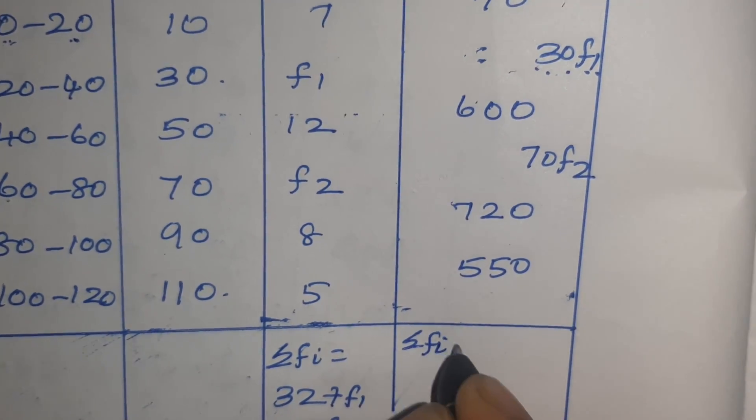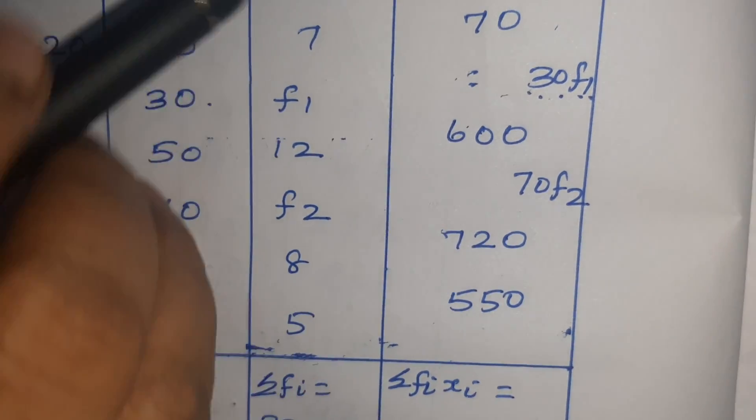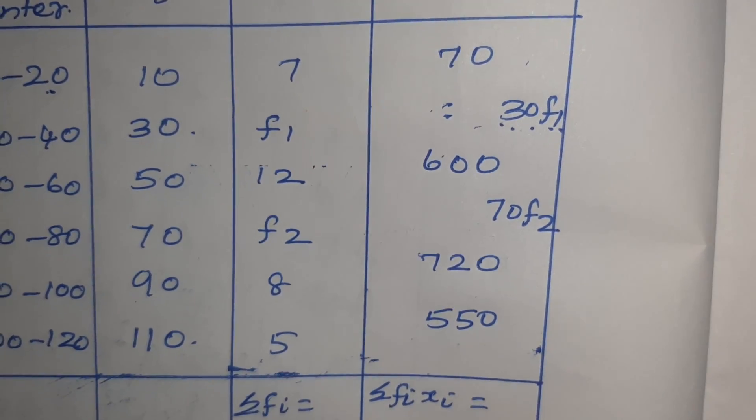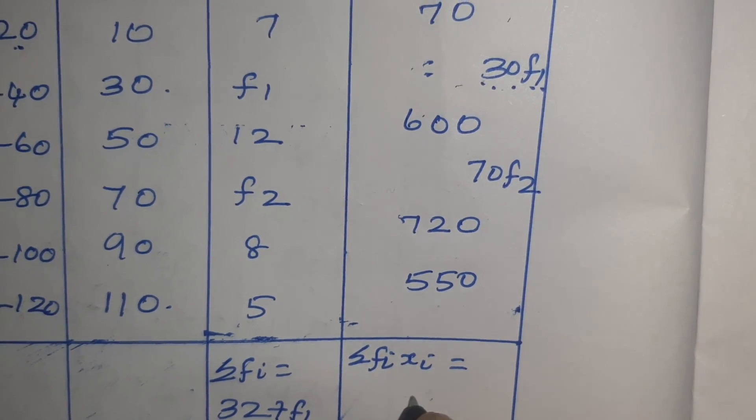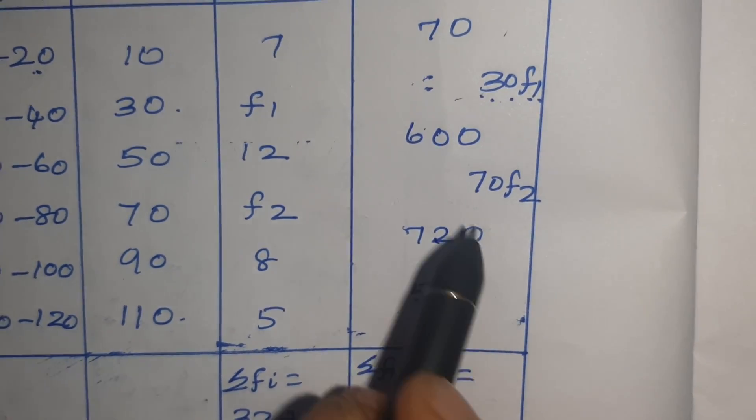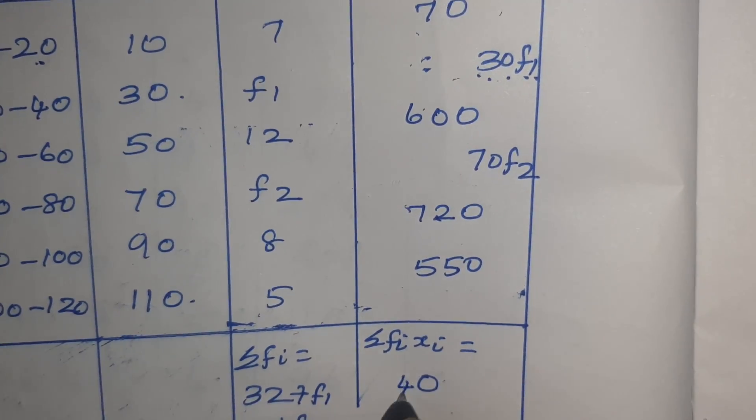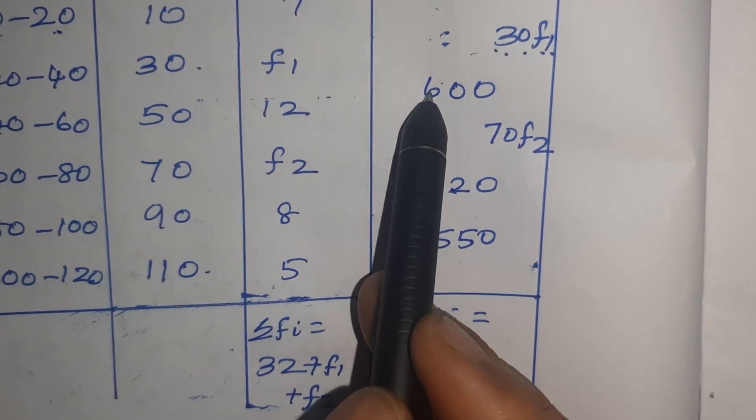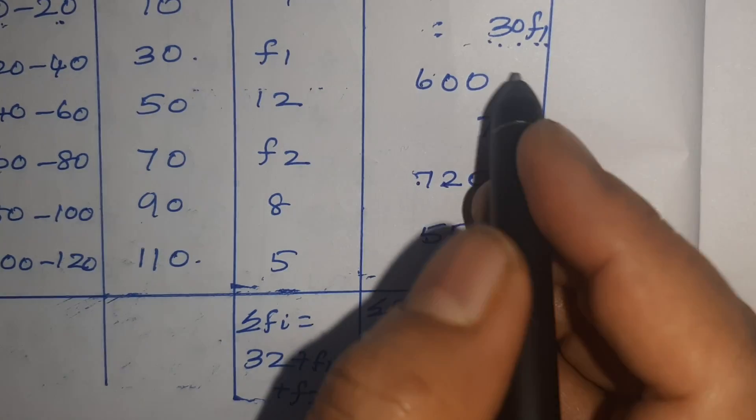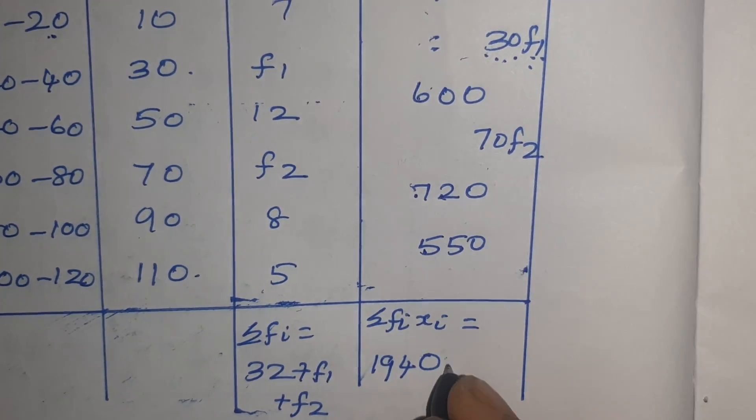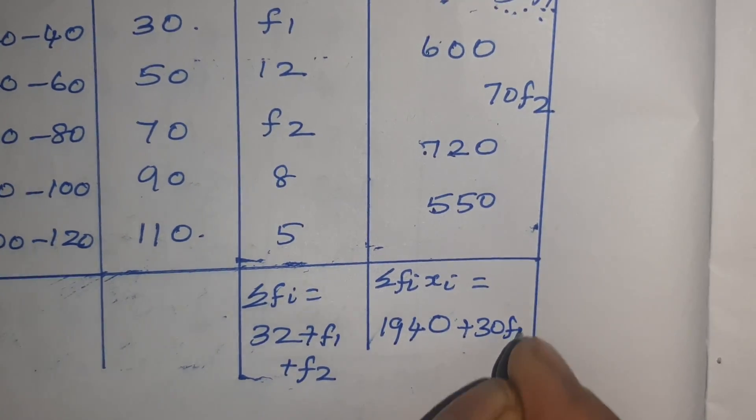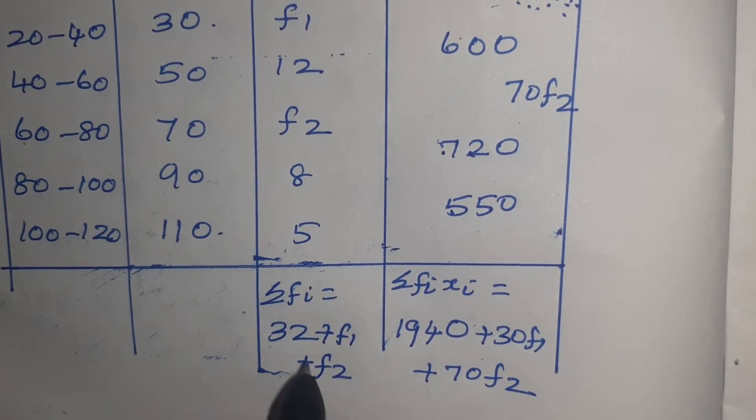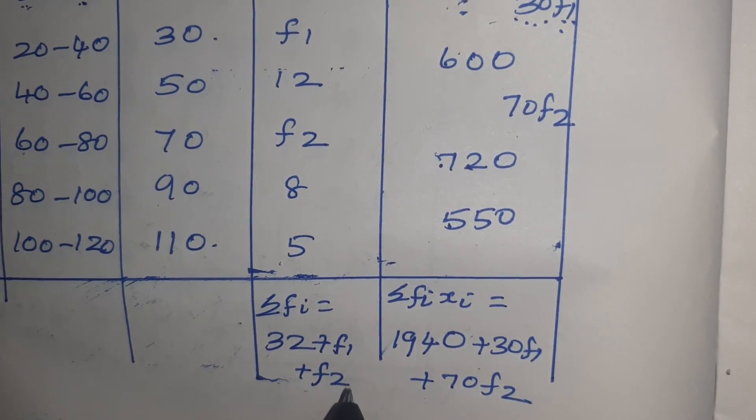Next sigma Fi Xi. First add the numbers. Here 0, first 0. Then 5 plus 2 equals 7, 7 plus 7 equals 14. Then 1 plus 5 equals 6, 6 plus 7 equals 13, 13 plus 6 equals 19. So 1940. Then here 30F1 plus 70F2.